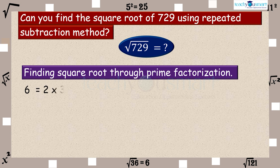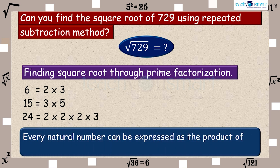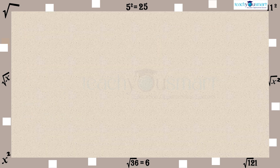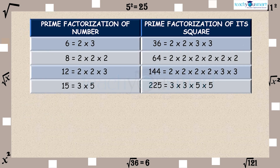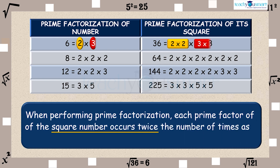We have 6 equals 2 multiplied by 3, a product of prime factors; 15 equals 3 multiplied by 5, a product of prime factors; and 24 equals 2 multiplied by 2 multiplied by 2 multiplied by 3, also a product of prime factors. Similarly, every natural number can be expressed as the product of prime factors. See the table of prime factorization of a number and prime factorization of its square. When performing prime factorization, each prime factor of the square number occurs twice the number of times as that of the number itself.